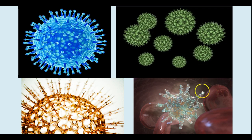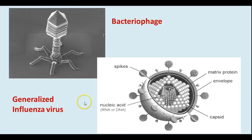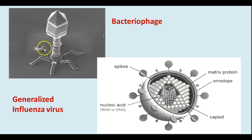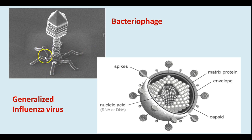Here we see lots of different shapes of viruses. They come in different shapes, sizes, and kinds of structure. This type is called a bacteriophage and it's one that infects bacteria. It kind of looks like a lunar module — the leg pieces are just for attachment to the surface of the bacterium; they don't actually let it walk and move around.